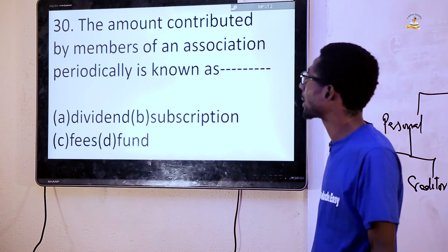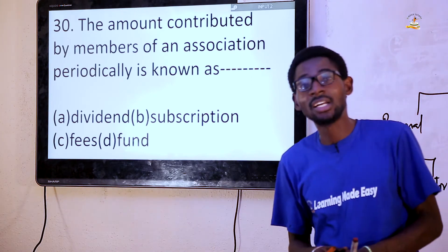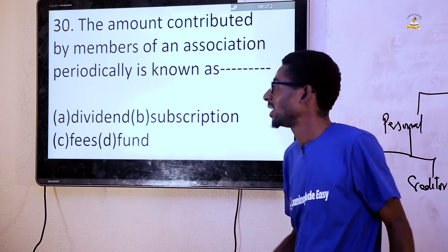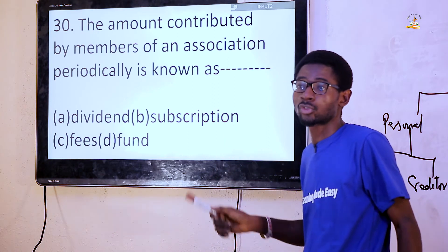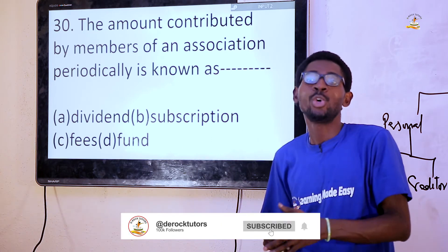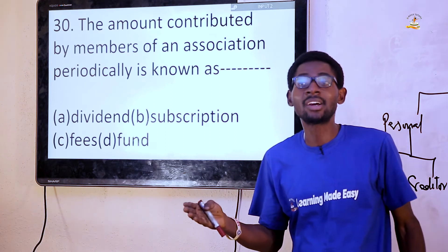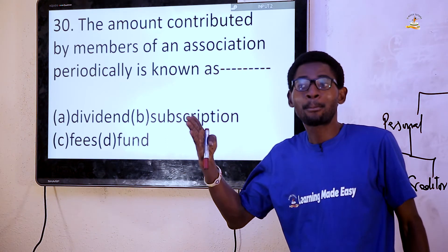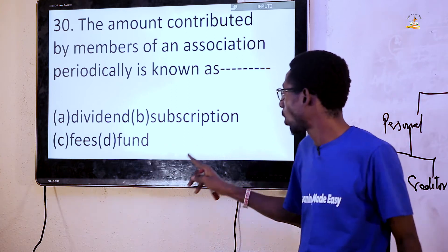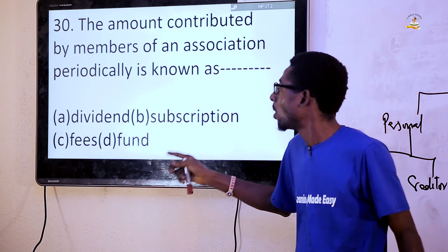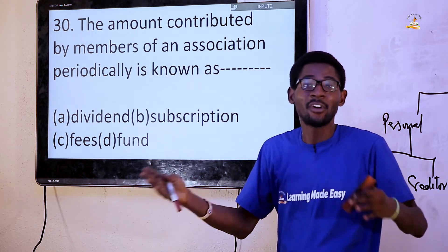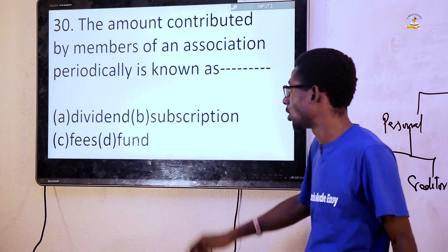Question 30: The amount contributed by members of an association periodically is known as — A: dividend, B: subscription, C: fees, D: fund. The answer is subscription, option B. Subscription is a compulsory contribution of members of a non-profit making organization, and it is also the largest source of income of a non-profit making organization. Dividend is the reward of a shareholder; fees is payment for something; fund is money.